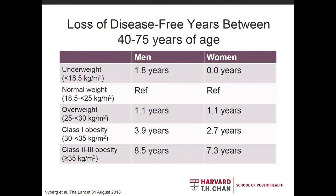An article published about a month ago looked specifically at several European cohorts and the loss of disease-free years, which is a really useful indicator when thinking about overweight and obesity, particularly globally in the context of low- and middle-income countries. The analysis estimated the loss of disease-free years from multiple diseases — not just cardiovascular and cardiometabolic disease, but also cancer, asthma, and COPD — relative to maintaining a normal weight BMI. They found that the two classes of obesity they examined were significantly different compared to normal weight, with up to three to eight and a half years of disease-free life lost.